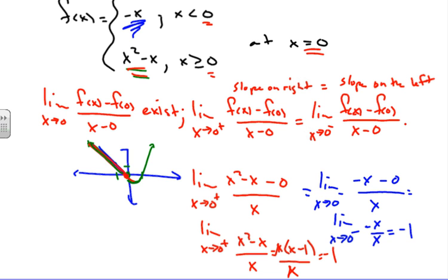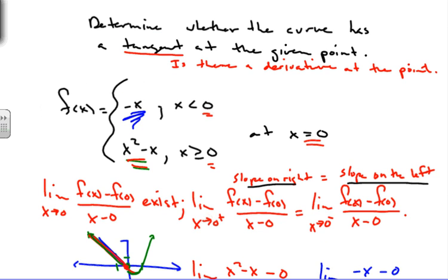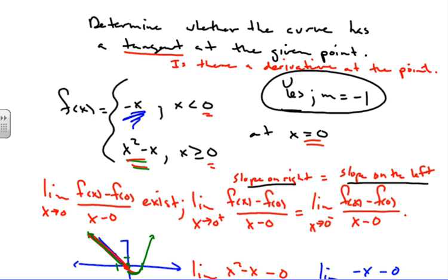Because the right-side limit and the left-side limit are equal to each other, we know the slope on the right equals the slope on the left. Therefore, yes — the curve does have a tangent at the given point, and that slope is equal to negative 1. The key is to identify what is happening to the right and left of that point in the piecewise function. We'll do another example in the next tutorial.